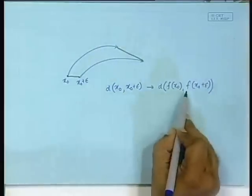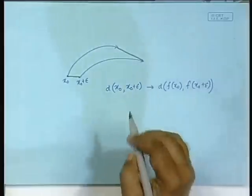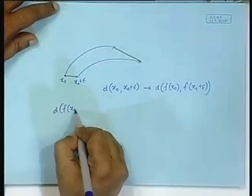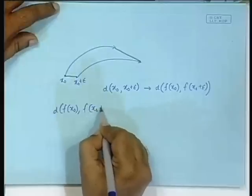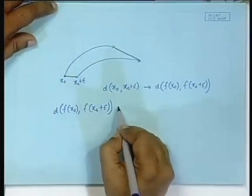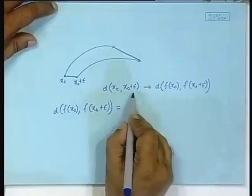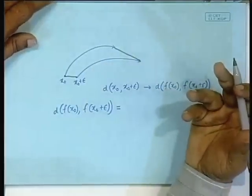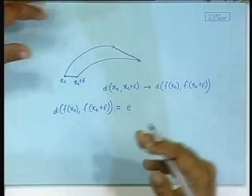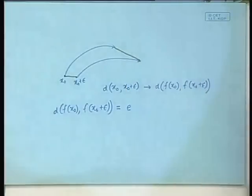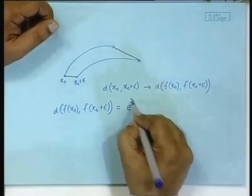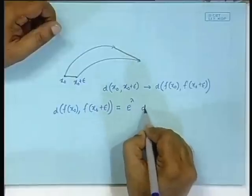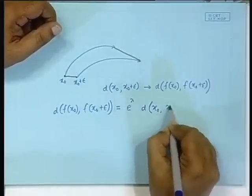We want to say that d(f(x₀), f(x₀ + epsilon)) equals the initial separation times e to the power lambda — that is, exponential separation. We are talking about exponential increase in separation: e to the power lambda times d(x₀, x₀ + epsilon).